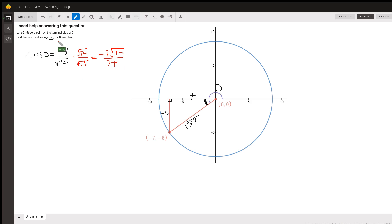The cosecant of theta is the reciprocal of the sine function. Sine would be negative five over radical 74. So the reciprocal would be radical 74 over negative five. And of course we could just put the minus sign out front.